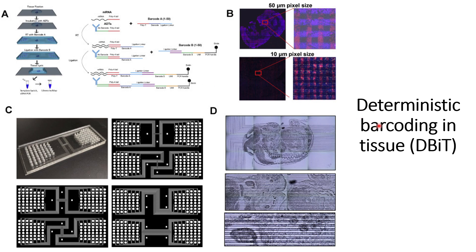We will continue our discussion about deterministic barcoding in tissue. In our previous videos we understood how this is better than other techniques. In this video we will understand how these barcodes are prepared, how the instrument looks, and some examples of staining of mouse embryo models. This is the workflow of DBiT — deterministic barcoding in tissue.